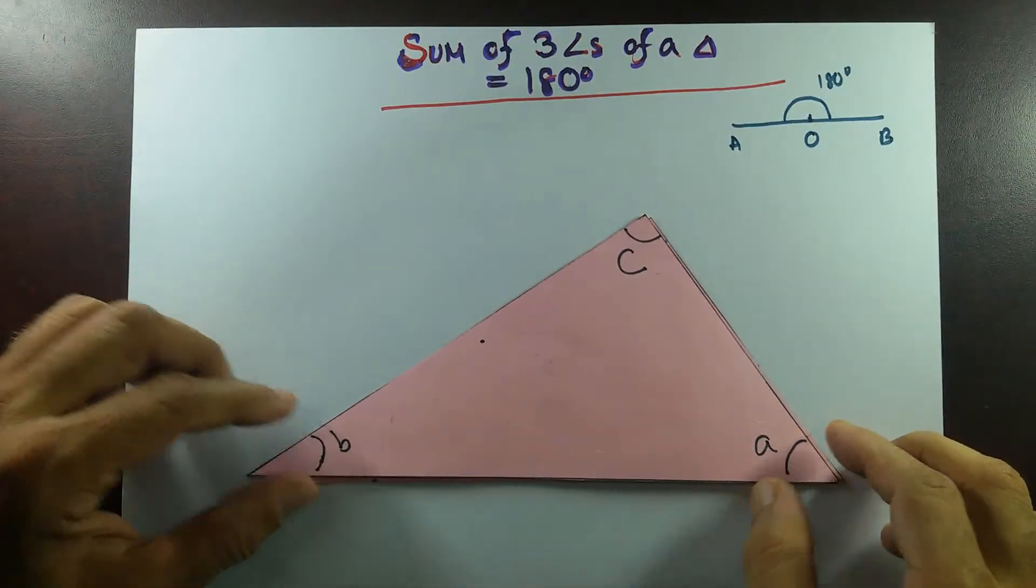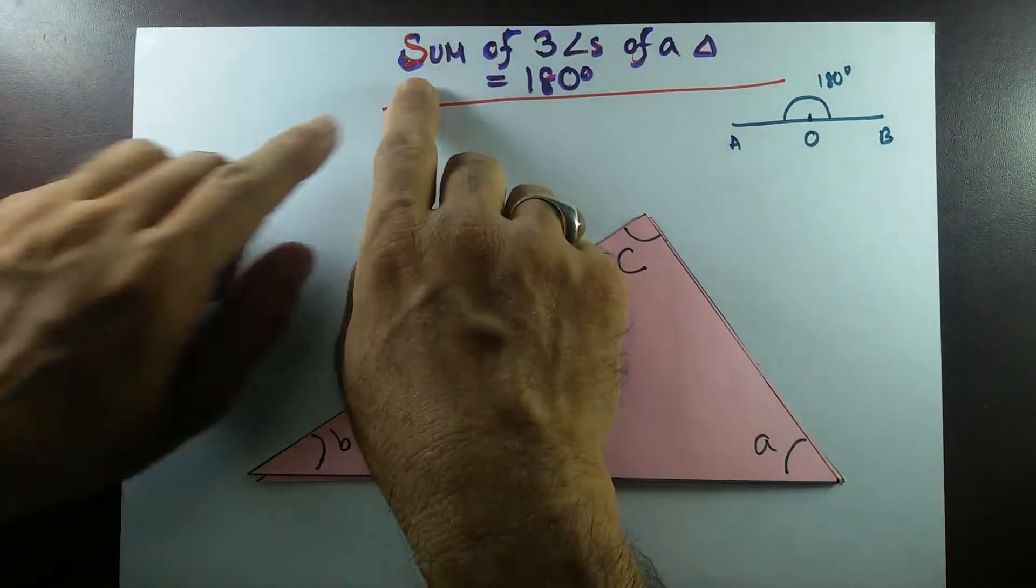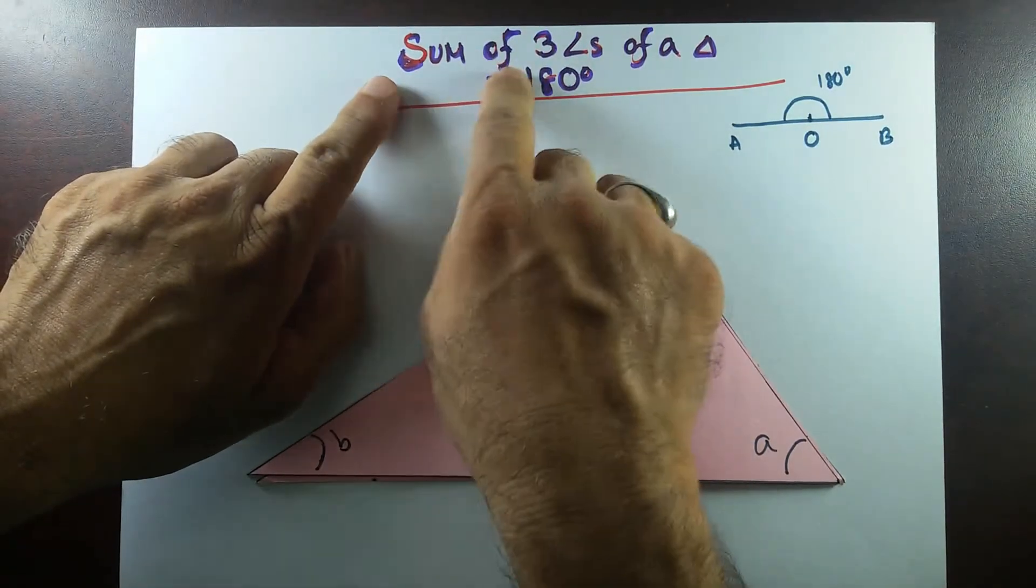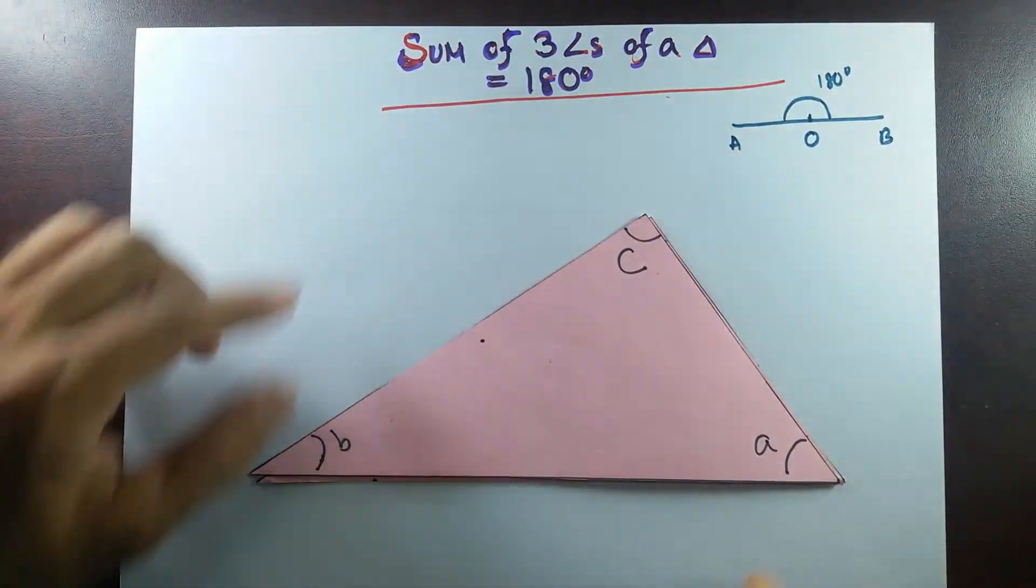Good morning. I'm going to do a math project today. The topic is sum of three angles of a triangle equal to 180 degrees.